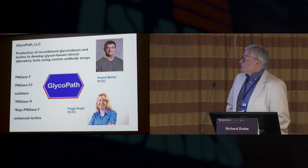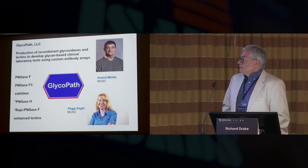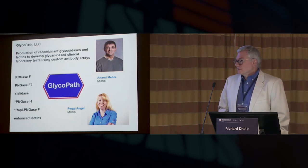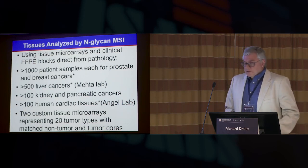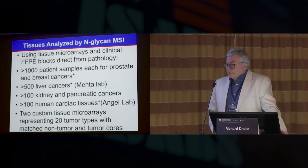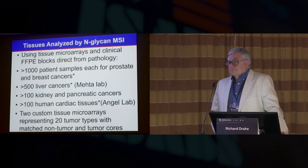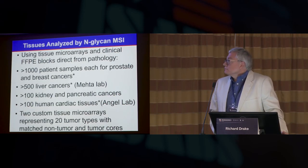We won't have time to get through all of it. My colleagues, Anand Mehta, who made most of the enzymes we use, and Peggy Angel at MUSC, we've recently formed a company to start working on some of these projects. You'll kind of see at the end where I think this company is going. So, for tissues, as Manfred said, we've been doing this a while, and numbers are building up, particularly if you're using tissue microarrays where you can get a lot of patient samples in one slide. And so, for prostate and breast, we've done well over a thousand patient samples. We're getting higher and higher now with liver cancers with Anand and many other tissues.